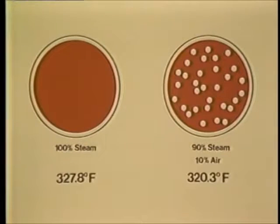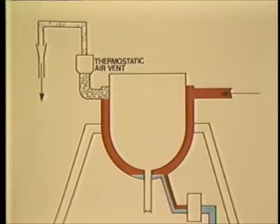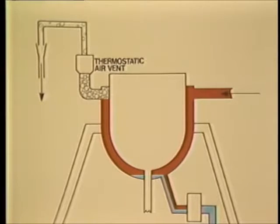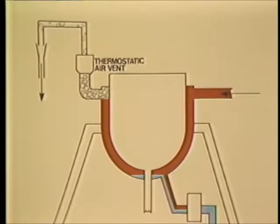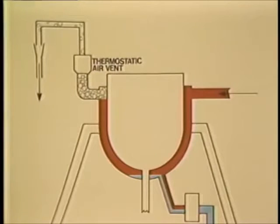In addition, an air-steam mixture has a lower temperature than pure steam. Install thermostatic air vents at the top of the heat exchanger's steam space and as far from the steam inlet as possible. Air vents are typically used on jacketed kettles, retorts, vulcanizers, jacketed sterilizers, and most batch process equipment.